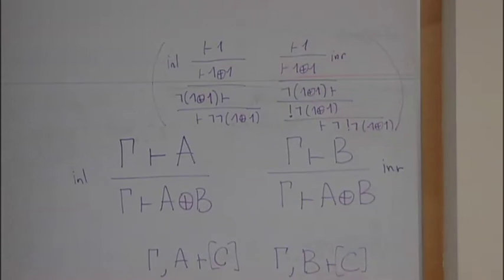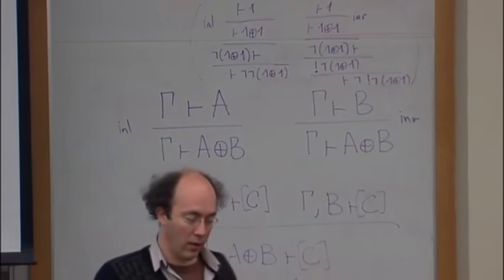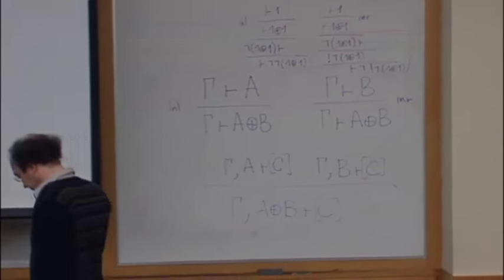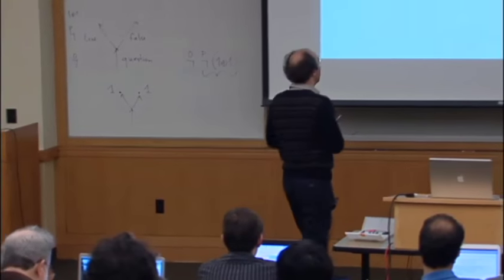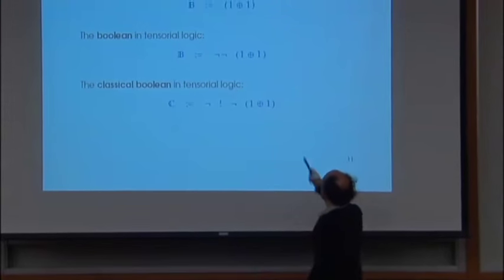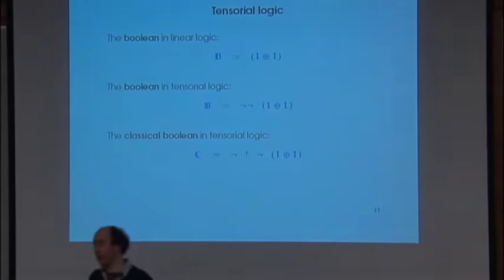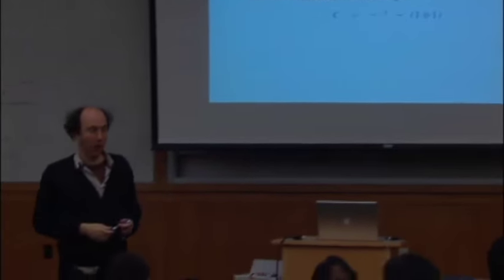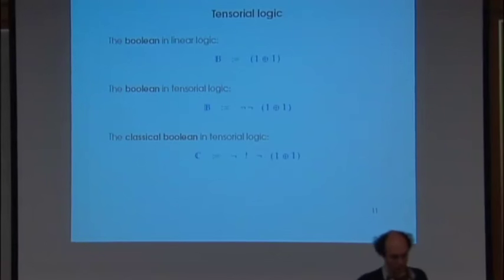I will explain why. The point is that when one translates simply typed lambda calculus of functional programs into continuation passing style, one typically uses this kind of interpretation for the Boolean. But if we look at a language like PCF — just the lambda calculus with recursion — the Booleans are interpreted differently, like this one.